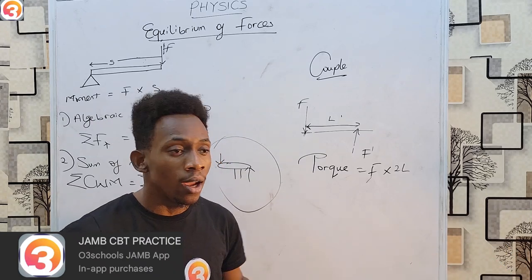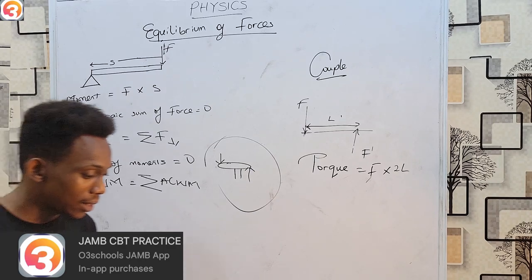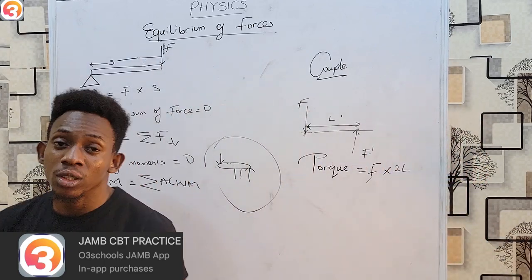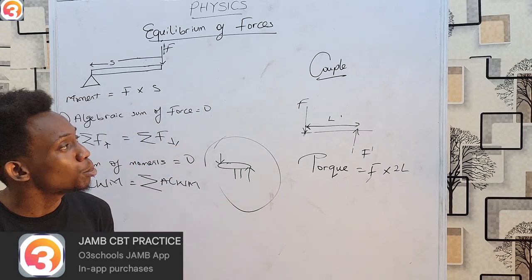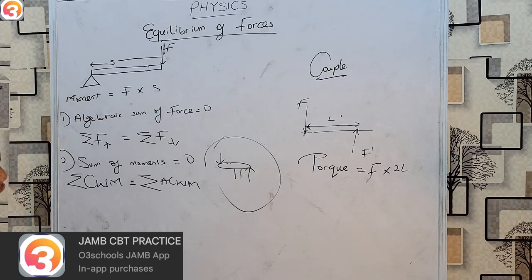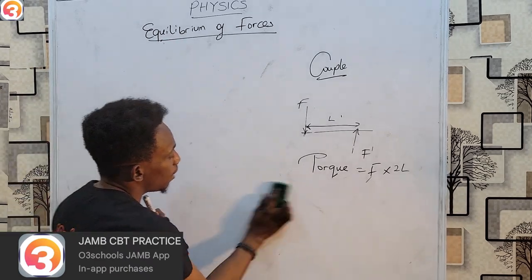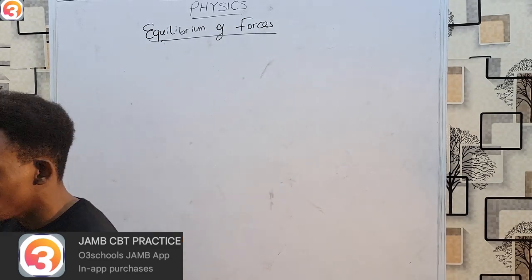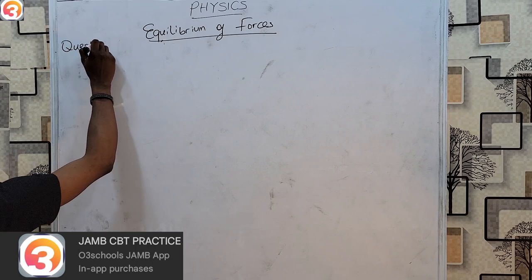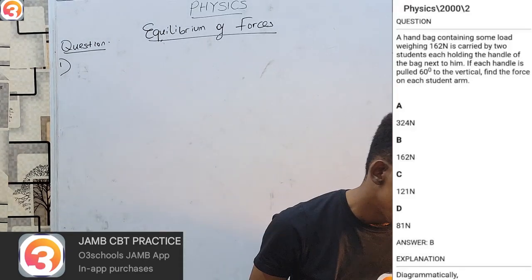That is basically what we need to note when solving for equilibrium of forces in solid objects. When dealing with liquids, you begin to look at things like density and pressure. But for now, this is equilibrium of forces for solid objects. With the formulas understood, let us open our O3Schools Jam app to solve some questions from past exams on this topic. Our first question is from the year 2000, question 2.